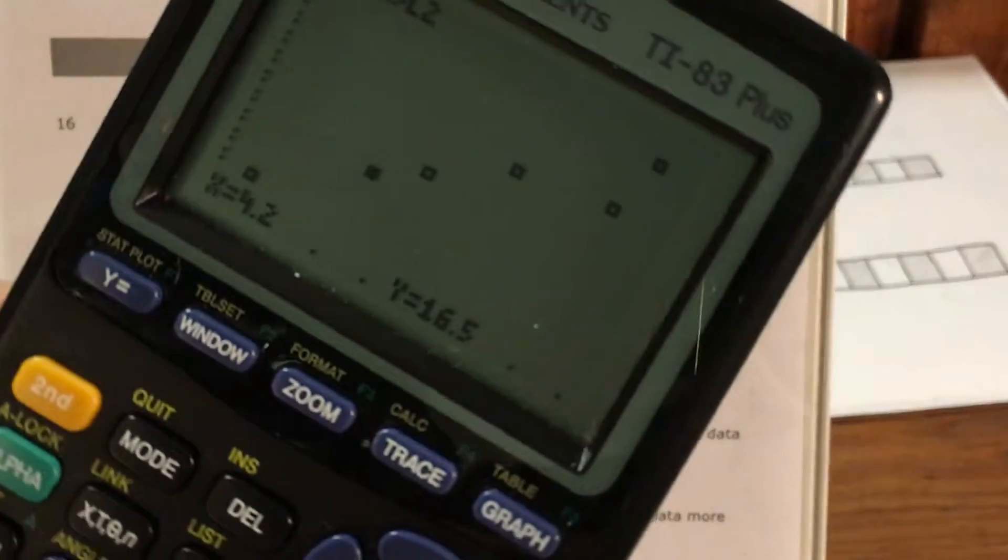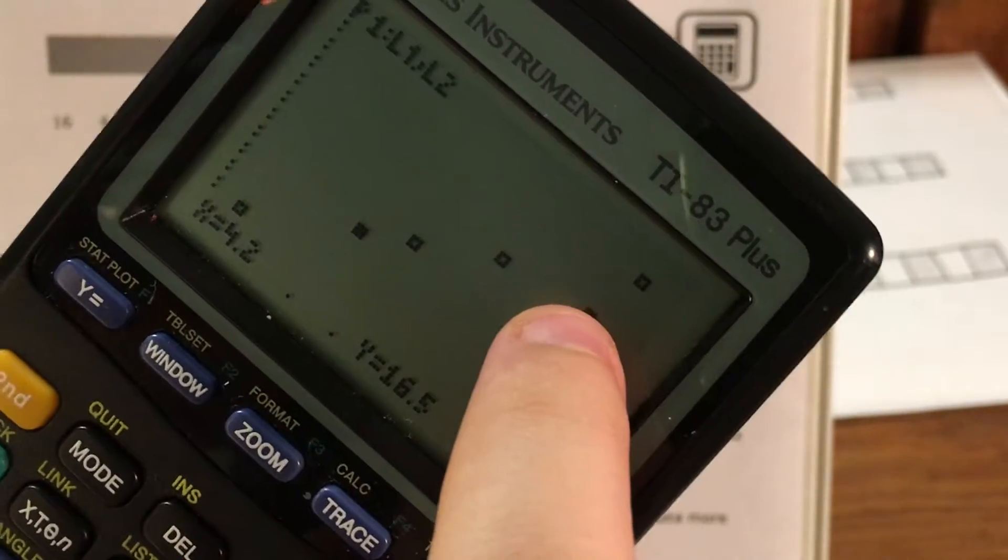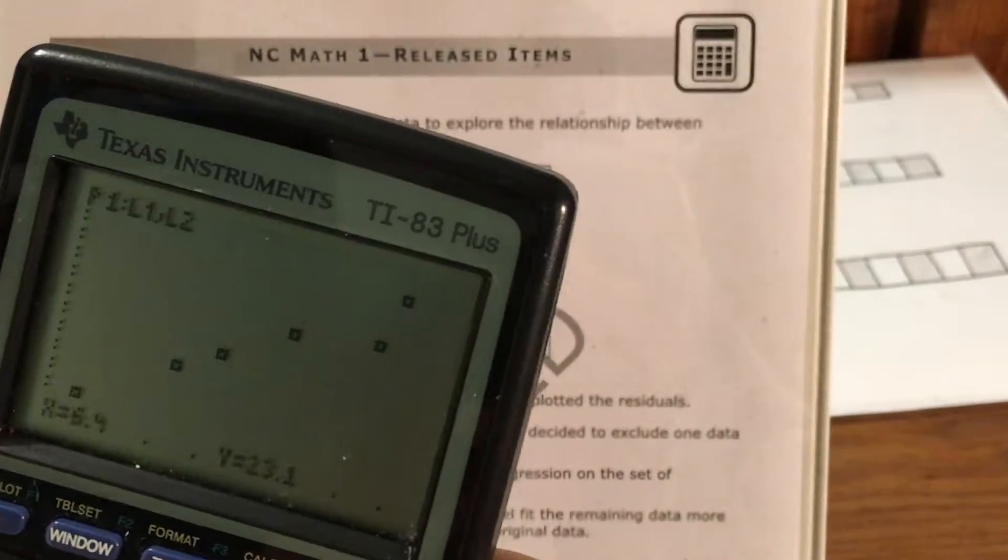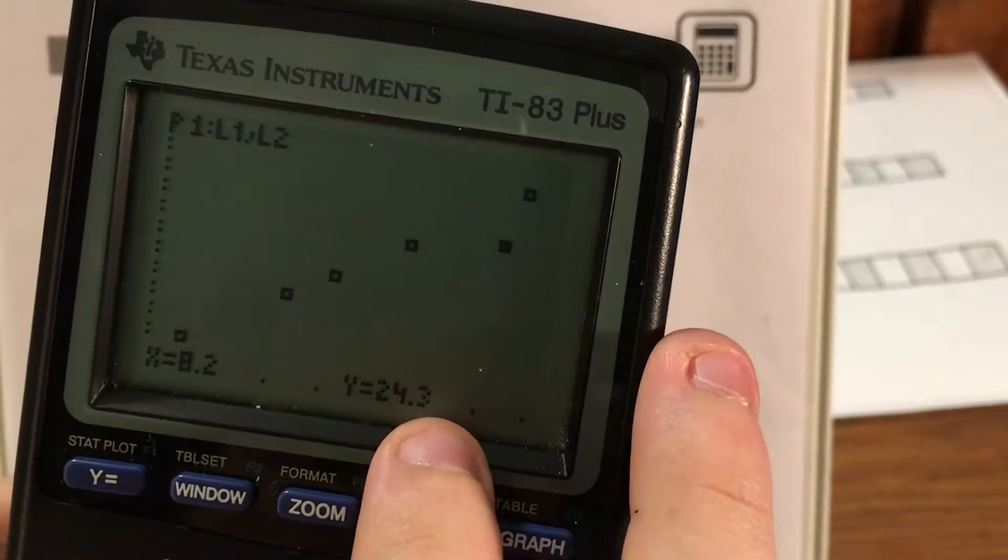But what I'm most interested in is, it looks like these five points are making a line and this one doesn't belong. So this point that doesn't belong is 8.2 and 24.3.